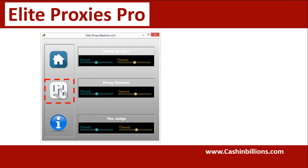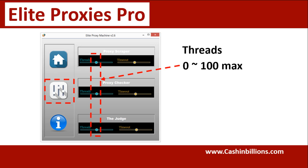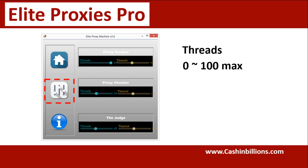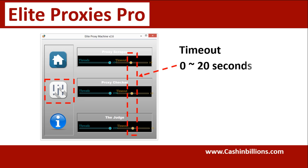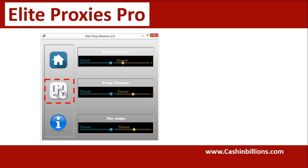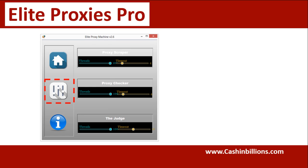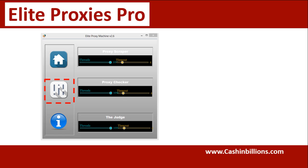From here, we can set the number of threads that we want to use and the timeouts that we want to use. You can select up to a hundred threads. This is going to be extreme overkill for most people. You can set your timeout — I've set this to four seconds, four seconds, and four seconds.